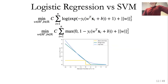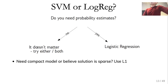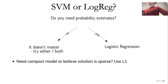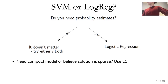Now we have two ways to do linear models for classification. When do you use them? The biggest difference is that logistic regression by default has well-calibrated probability estimates, which you'll learn about in two lectures. If you don't care about probabilities of your prediction, it doesn't matter — use either SVMs or logistic regression. If you think your data is sparse, use L1 loss because that makes those coefficients go to zero.